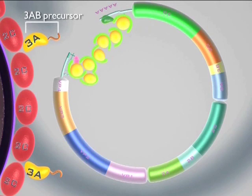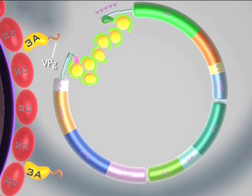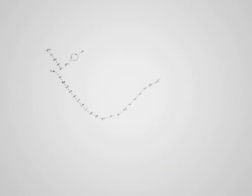The viral hydrophobic protein 3AB, precursor of the VPG, is anchored on a vesicle. VPG has a tyrosine residue, which is important for RNA synthesis.